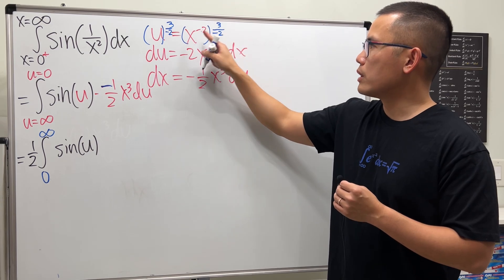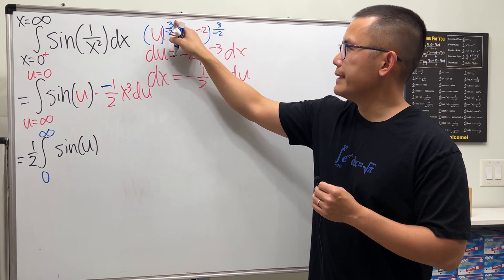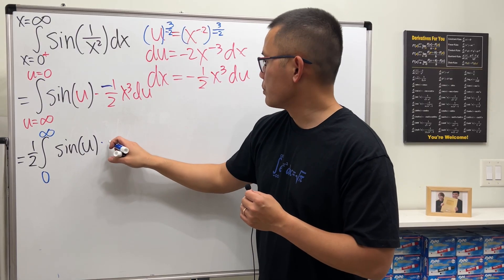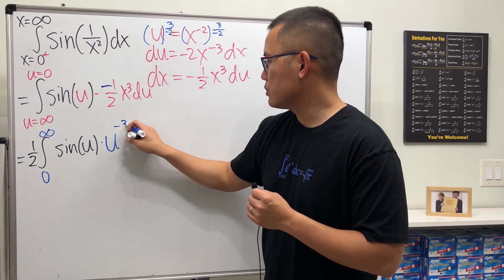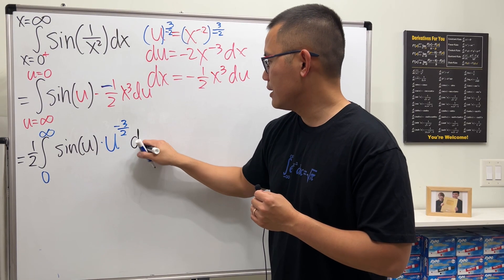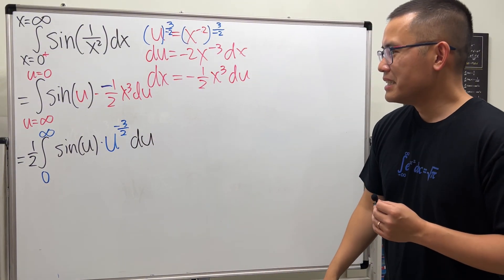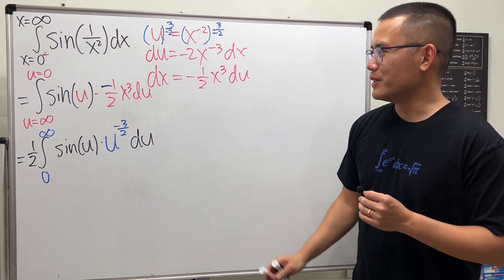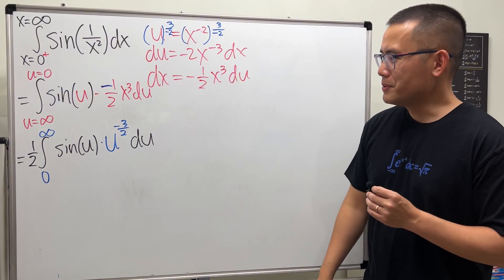So what do we do? We get x to the third power equals u to the negative 3 over 2. So that part, I'll just put here, u to the negative 3 over 2, and then du. Okay, is this really any better than the original? I hope so.